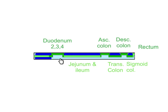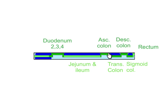In this slide you can see the retroperitoneal bowel corresponding to the second, third, and fourth parts of the duodenum. The first part of the duodenum is where it is continuous with the pylorus and starts to run retroperitoneally. This bit represents the jejunum and ileum, then the ascending colon coming into the transverse colon, descending colon, sigmoid colon, and rectum.